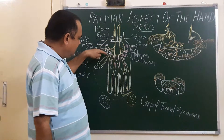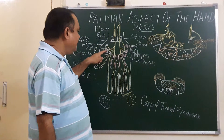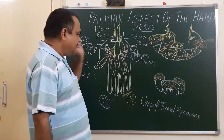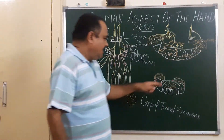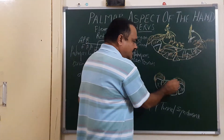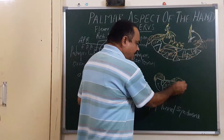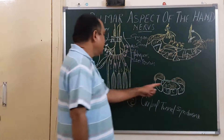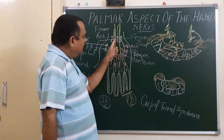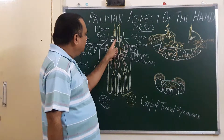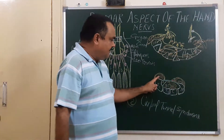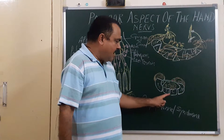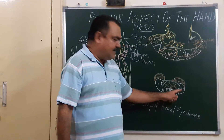You have seen the course and branches of these nerves. Here is the thenar eminence and this is the hypothenar eminence. This is a transverse section at this level, showing the thenar eminence, hypothenar eminence, trapezium, trapezoid, capitate, and hamate bones.